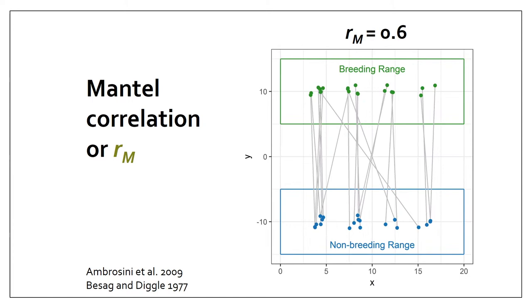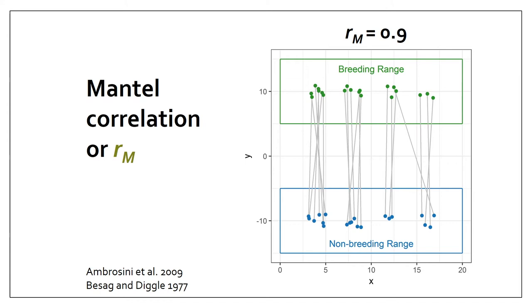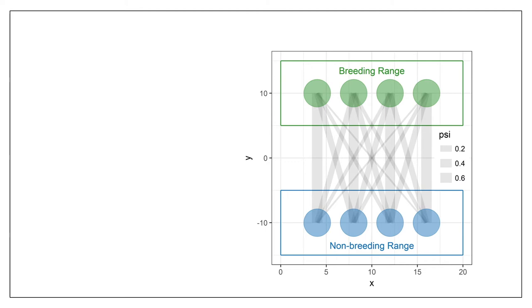RM has a lot of great properties as a metric of migratory connectivity strength. However, the method doesn't really work when you have transition probabilities between populations instead of locations of individuals — for example, discrete breeding and non-breeding populations where the width of the line indicates how probable the transition is. RM can also be unreliable when the number of individuals recorded per population doesn't match the relative abundances in the wild — where there are more sampled individuals from populations on the left but more total individuals from populations on the right.